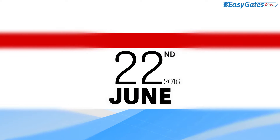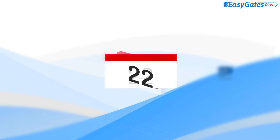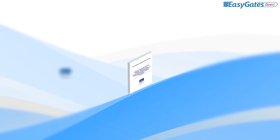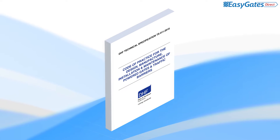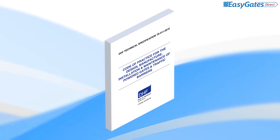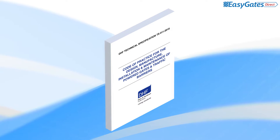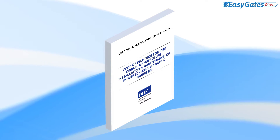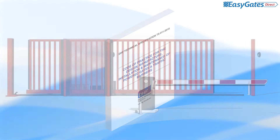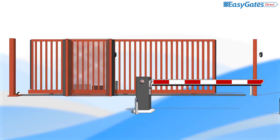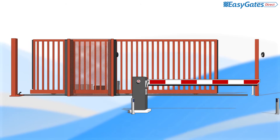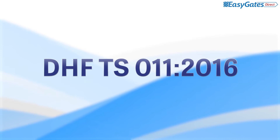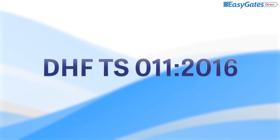As of the 22nd of June 2016, the DHF trade body that represents the UK gate and door industry has released a new code of practice. Several key elements of this code of practice have been designed to demystify complex standards and make things clearer for installers and maintainers of gates and barriers to understand. One of these topics is the force testing of gates and barriers. In the following animations we will explain in simple terms how to carry out these tests in line with the code of practice.